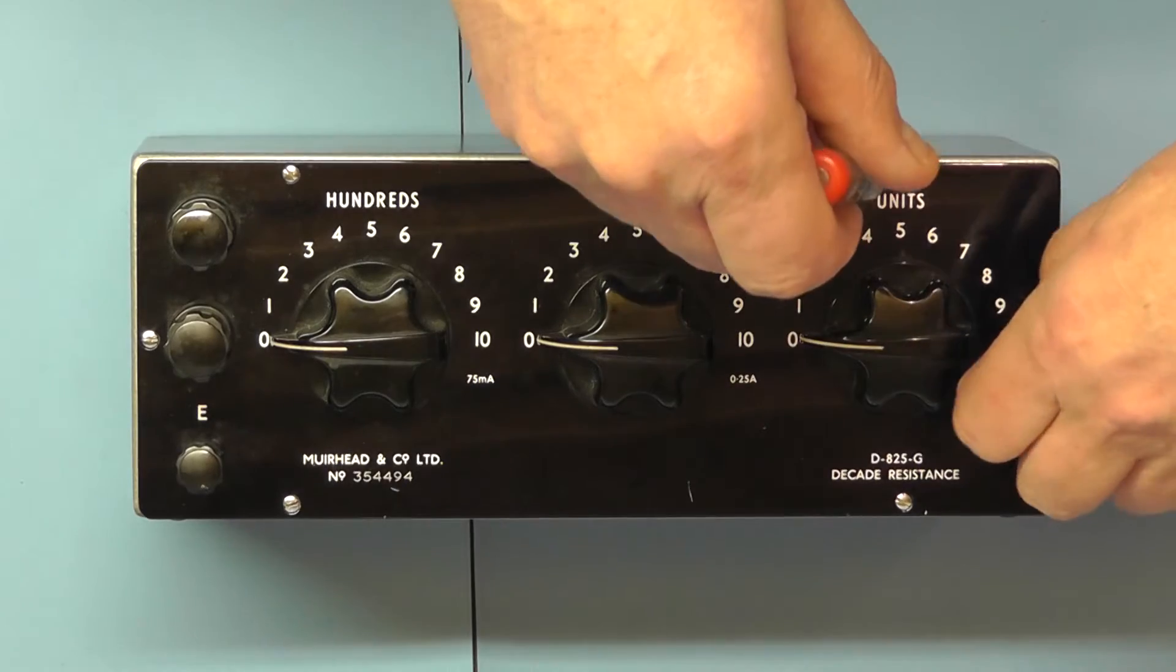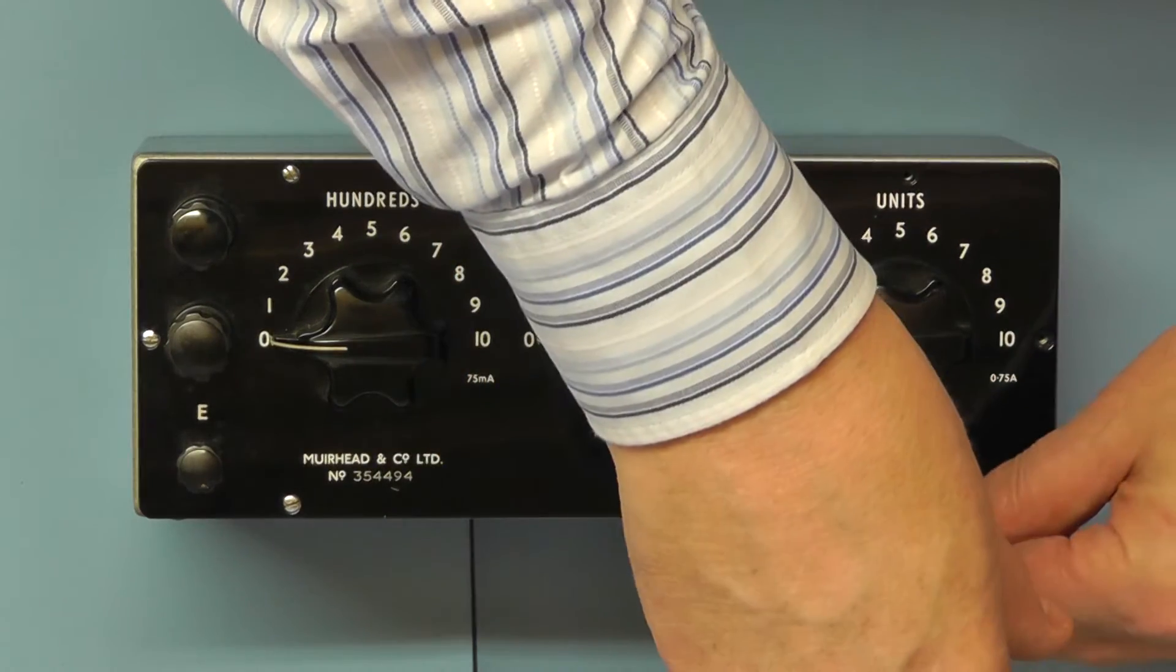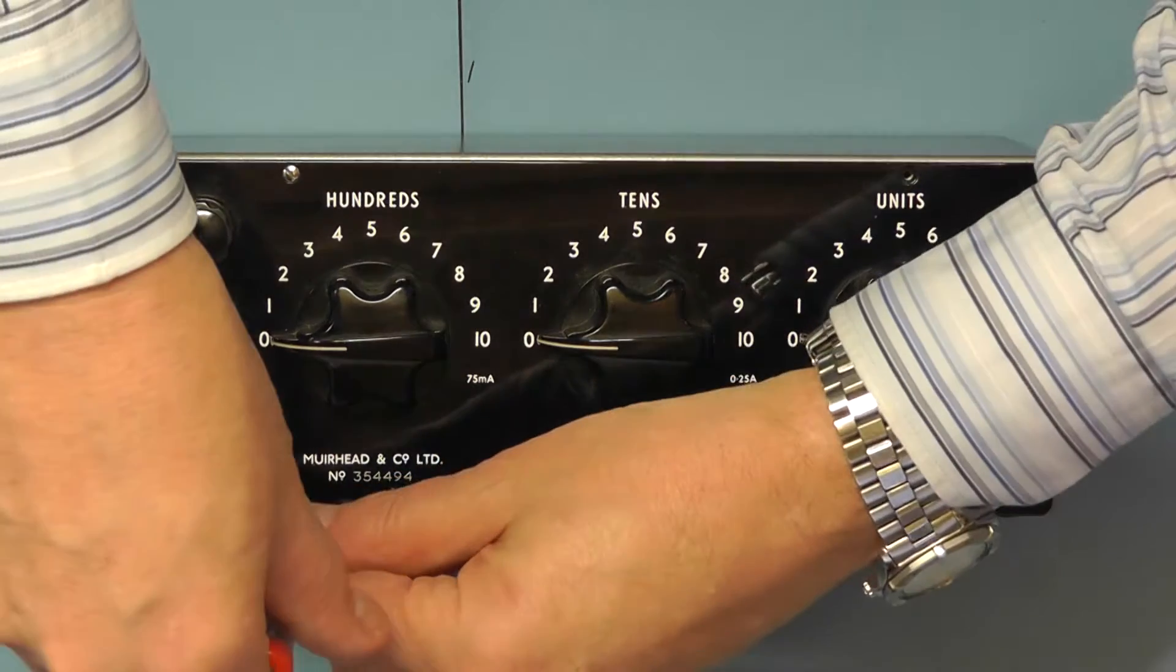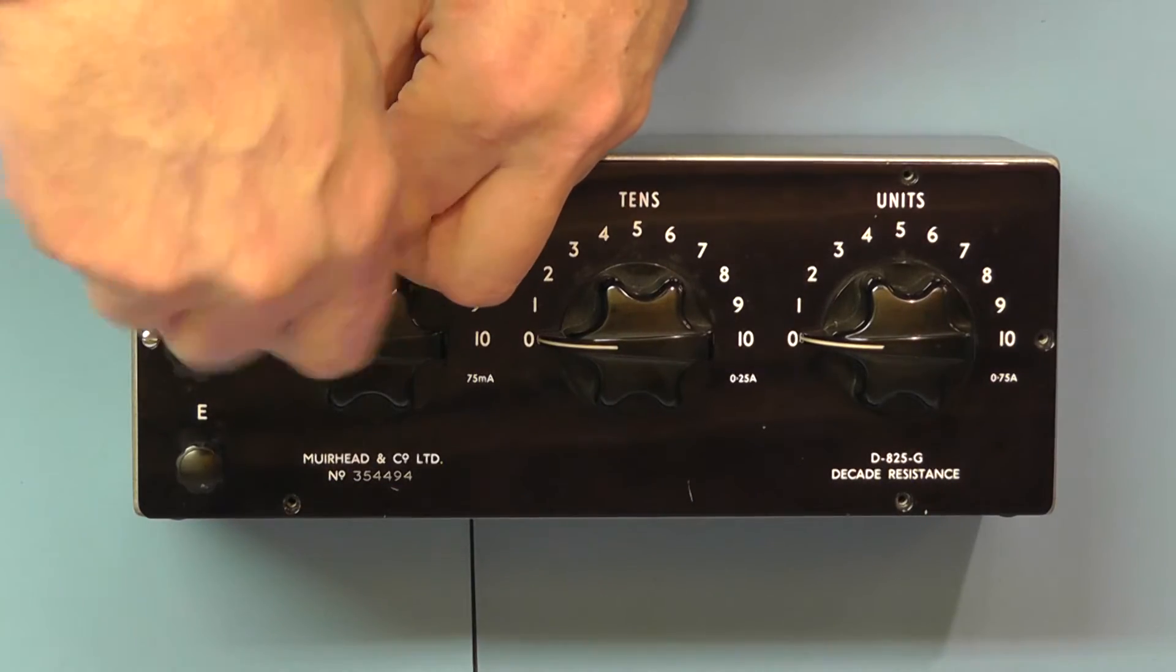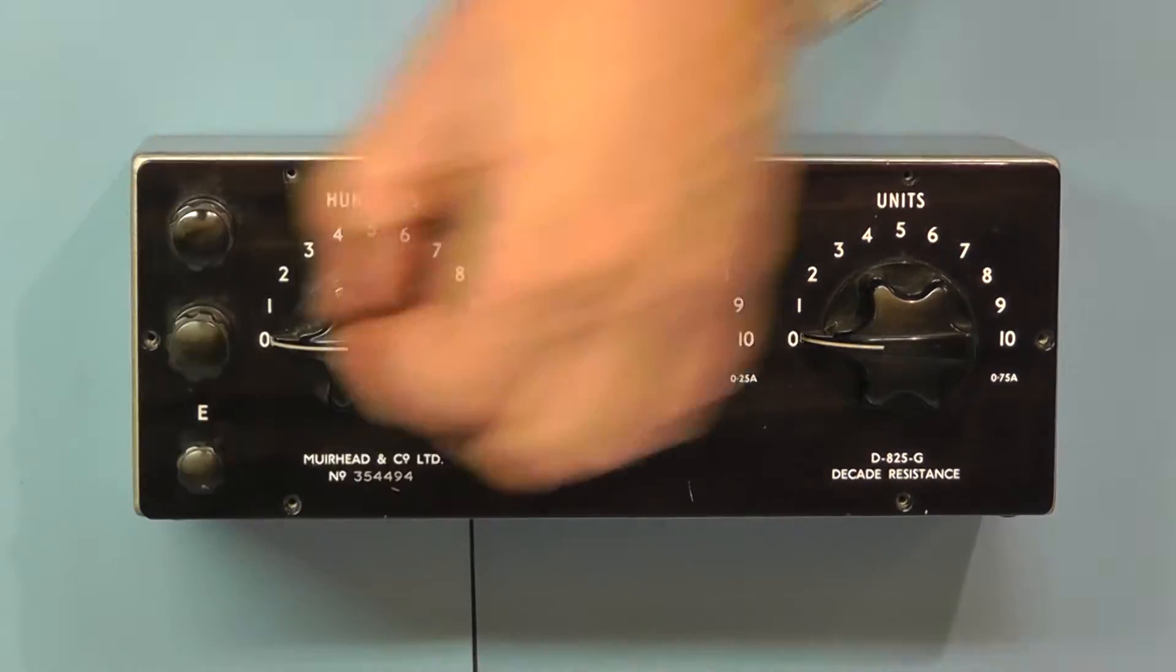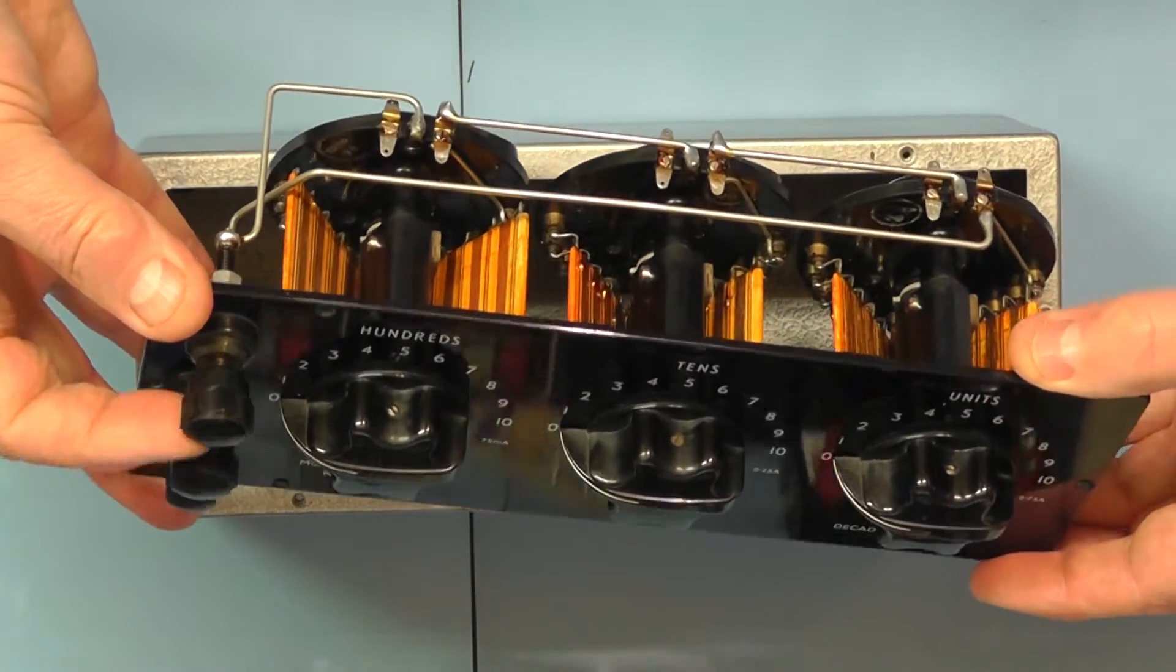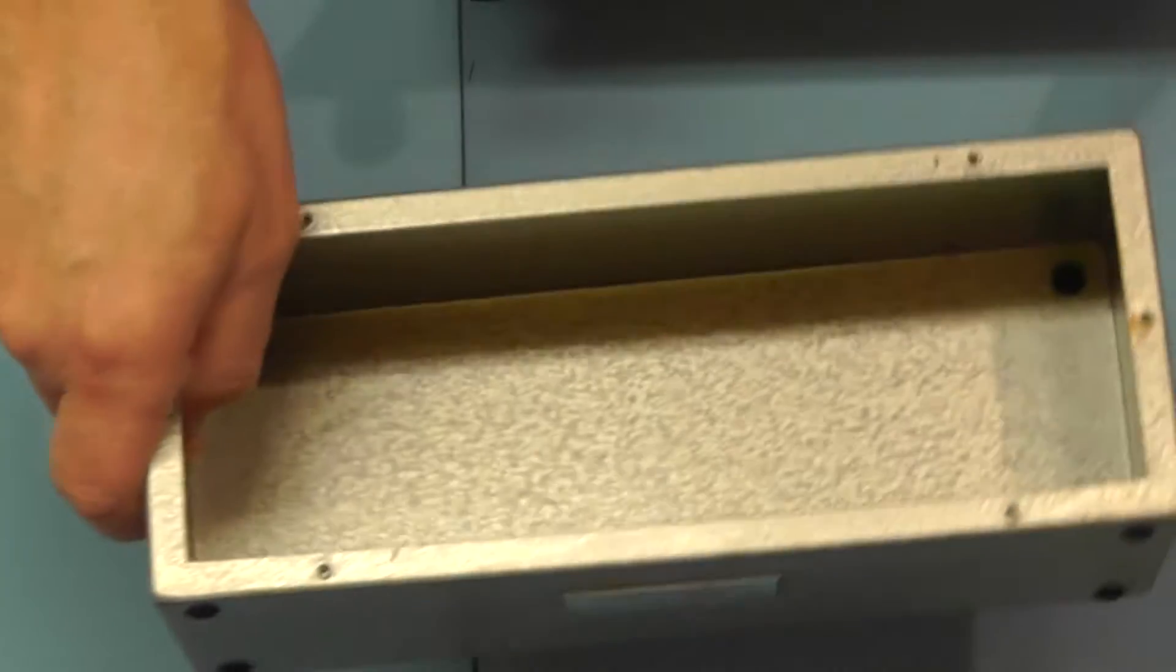There's several screws at the top of the decade box. The casing itself is a metal case but the front panel looks like it's a black Bakelite. Also the large switch controls here are also made of black Bakelite. The screw terminals have got brass connectors. There you can see inside the unit. That's the casing, just a simple metal casing.